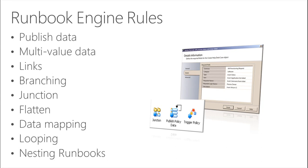There are several runbook engine rules to discuss. First: published data. Published data lets you use information from one activity in another activity within the same runbook. Each activity has a specific set of published data — after it runs, it publishes that data to the data bus, and the next activity can consume it. All activities also publish a common set of data items like start and stop time and completion status. Link conditions also use published data to add filtering and decision-making capabilities to a runbook.